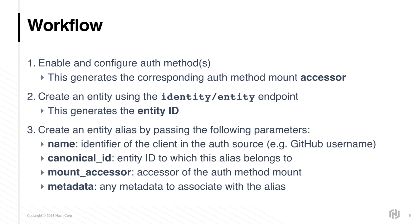Finally, an entity alias can be created by passing in the following parameters: Name, which is the identifier of the client in the auth source, for example a GitHub username; Canonical ID, which is the identity to which the alias belongs; Mount accessor, which is the accessor of the auth method mount; and Metadata, which is any metadata to be associated with the alias.